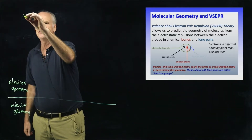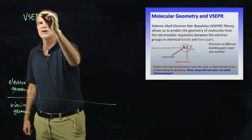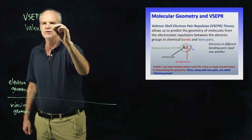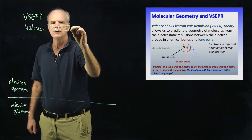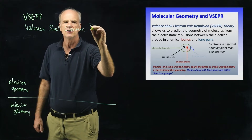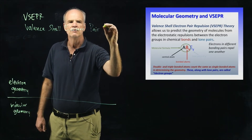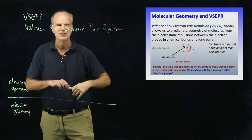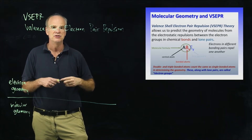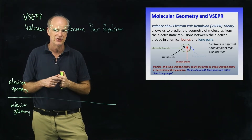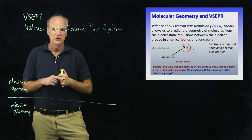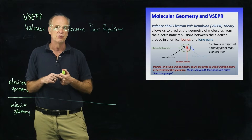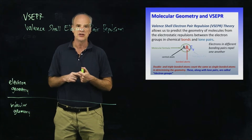So VSEPR stands for valence shell electron pair repulsion theory. The theory is about using the valence electrons around a central atom and understanding that because electrons are negatively charged, pairs of electrons will repel each other, and that repulsion creates the shape of the molecule.